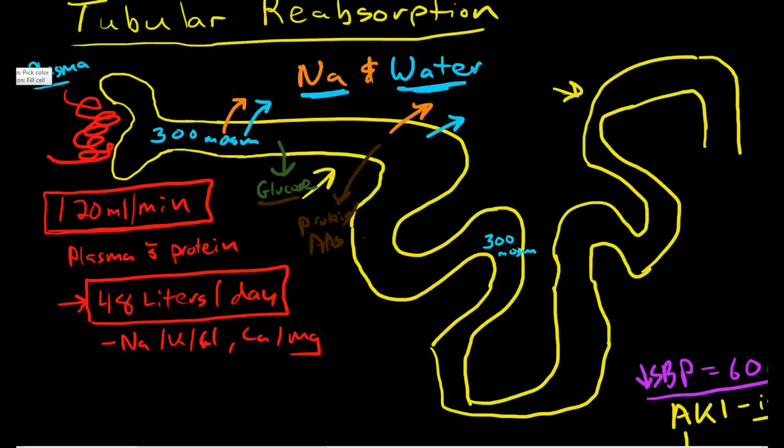Now, in the distal tubule, at times of potassium excess in the body, this is where we tend to excrete large amounts of potassium. And we also tend to excrete our creatinine here.